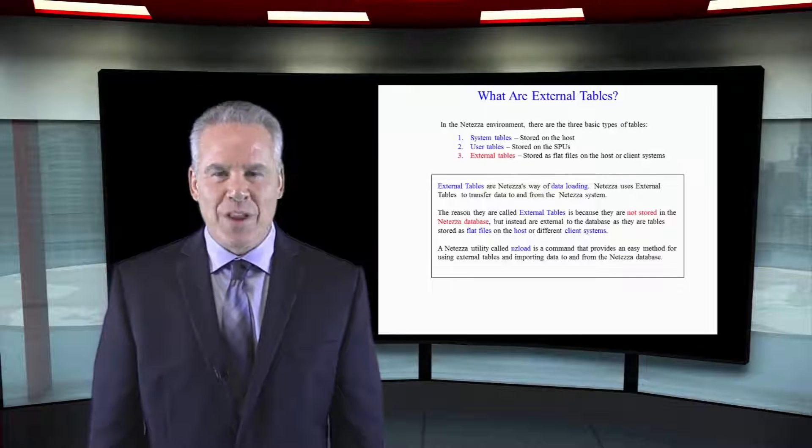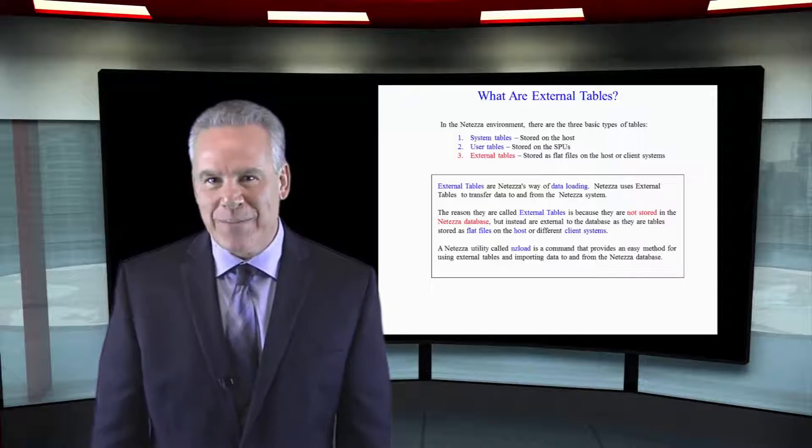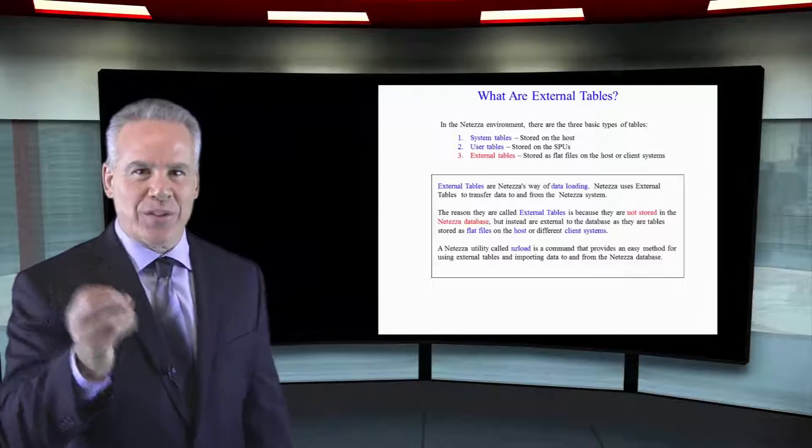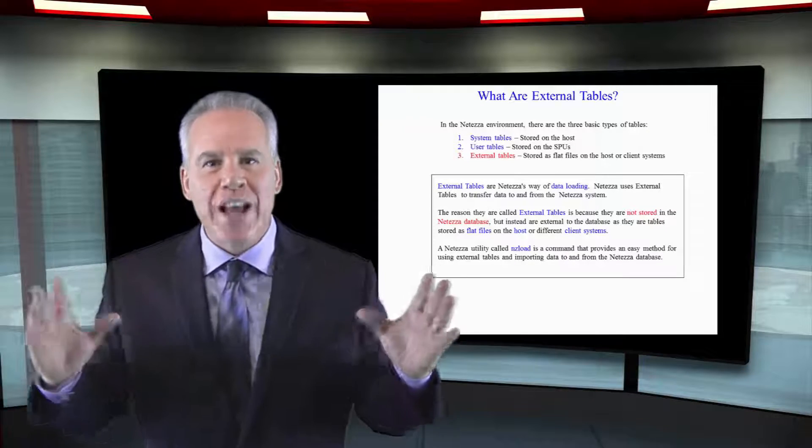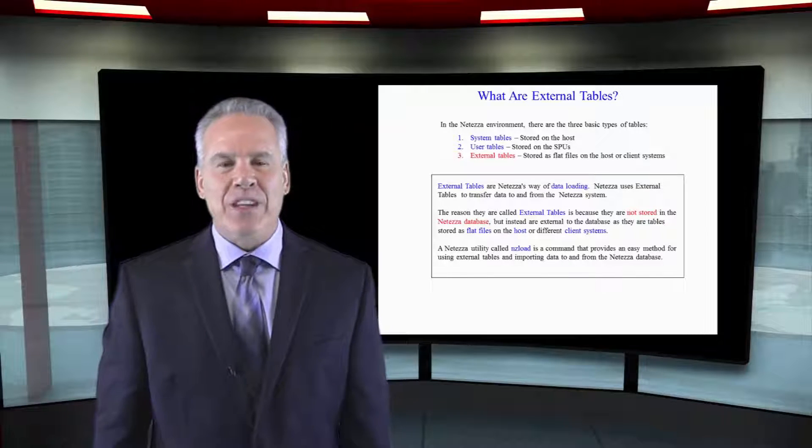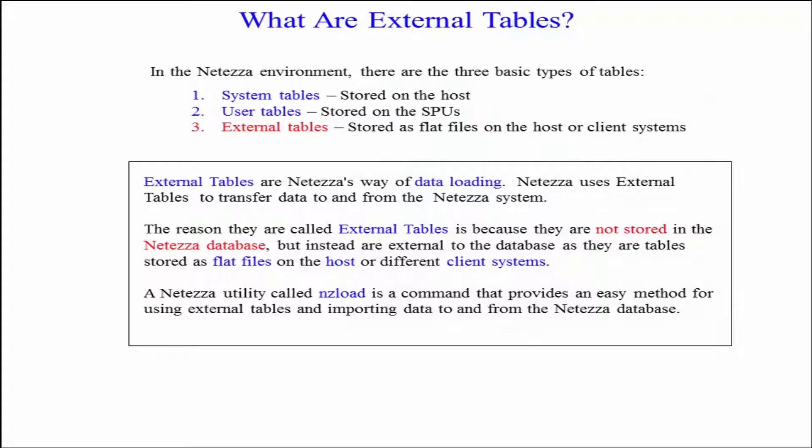We've seen derived tables. We've seen temporary tables. Now we get to see external tables. These are tables that are not stored on the Netezza database or the spool. These are stored either on the host or as flat files or even on another database somewhere. That's what an external table is.